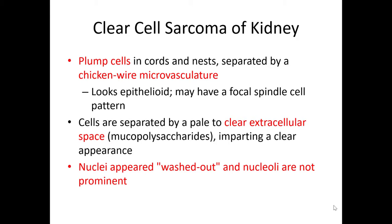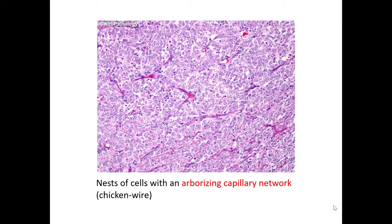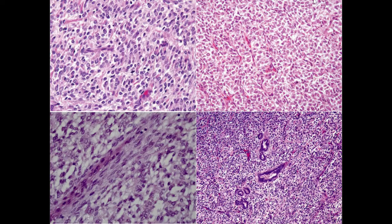The nuclei tend to appear washed out, meaning marginated chromatin, and nucleoli are not generally prominent. Here's an example: a tumor that has a nested architecture separated by a chicken wire delicate microcapillary network. If it were an adult, you might think about some variant of clear cell renal cell carcinoma based on those features. From low magnification you get the sense of clear cell change, but it's really just an extracellular matrix substance being washed away, giving it that clear cell appearance.